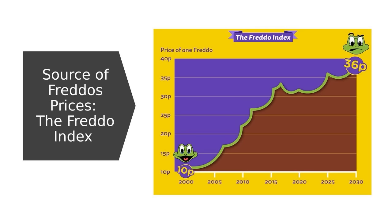For the Freddos, I did take them from the Freddo index. I had a little look because I struggled to believe Freddos are being sold for £1.50. It turns out in Tesco's and Sainsbury's they're still 25 pence, but there have been reports of Freddos being sold for 50 pence or over in a lot of places, all the way up to £1.50. So I took the average price as established by the Freddo index, which is something like 27 pence for 2023.